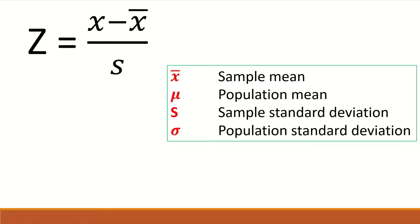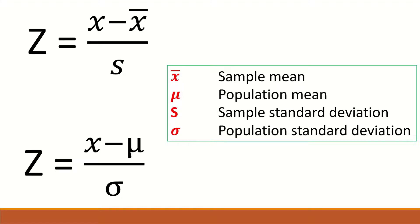How do we calculate the z-score? By using the equation: z = (x − sample mean) / standard deviation of the sample. Another way is to calculate the z-score using the equation: z = (x − population mean) / standard deviation of the population.